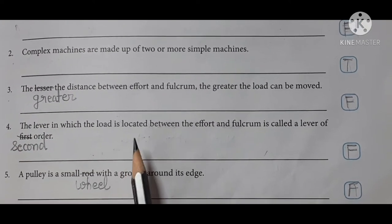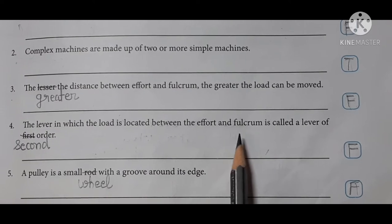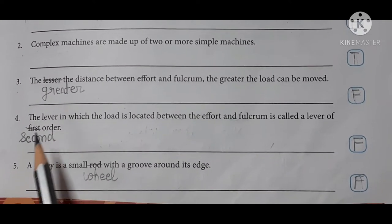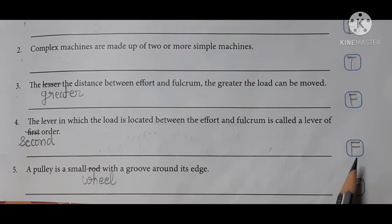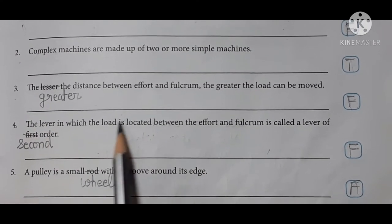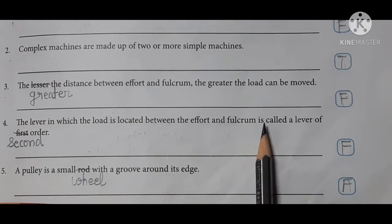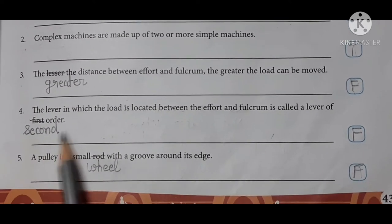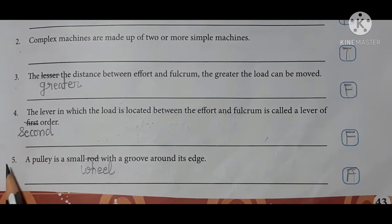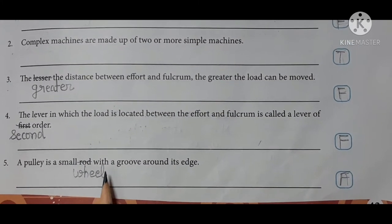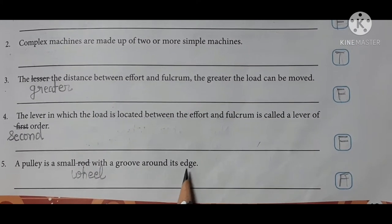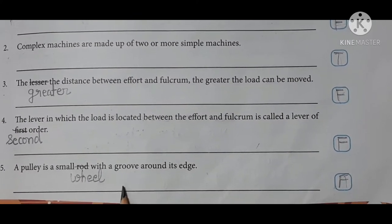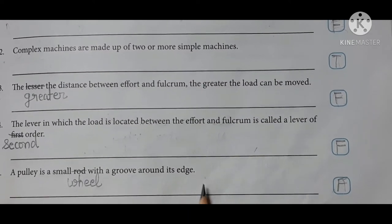Fourth, the lever in which the load is located between the effort and fulcrum is called a lever of first order. False statement. The lever in which the load is located between the effort and fulcrum is called a lever of second order. Fifth, a pulley is a small rod with a groove around its edge. False statement. A pulley is a small wheel with a groove around its edge.